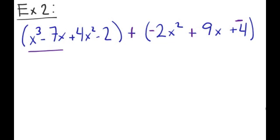So we're going to take this polynomial and write it in standard form. So we've got x cubed. The next term is going to be 4x squared. Remember, it goes by degrees: 3 degrees, 2 degrees. Then minus 7x, and then minus 2.